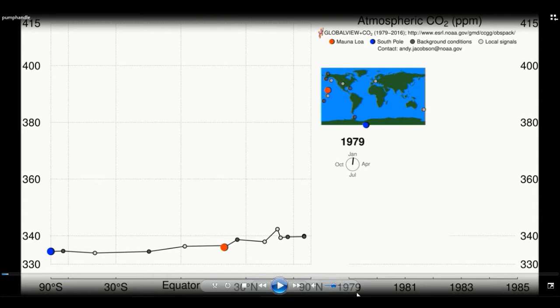It starts in 1979. This axis will change as I play the animation. You will see this gap fill in here with changes in carbon dioxide concentrations over time.